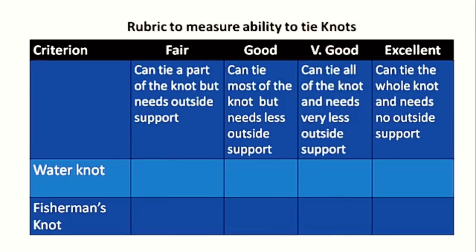This is a rubric designed to measure the ability to tie knots. There is a column from top to bottom that lists the criterion — the knots. The first is the water knot, the second is the fisherman's knot. Going from left to right, you find a continuum: fair, good, very good, and excellent — representing the child's ability to perform the task.